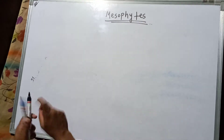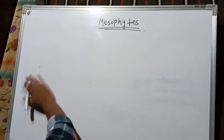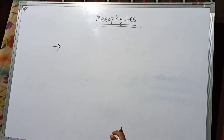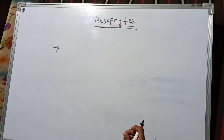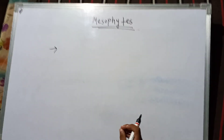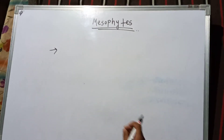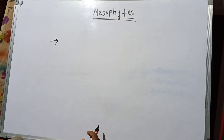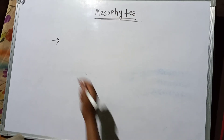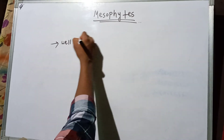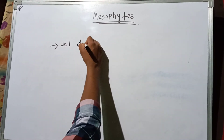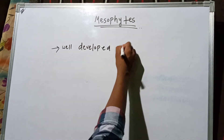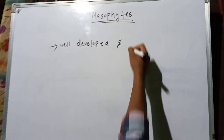Various features of mesophytes: these are terrestrial or land plants. The first feature is that mesophytes have a well-developed and extensive root system.